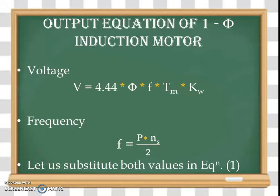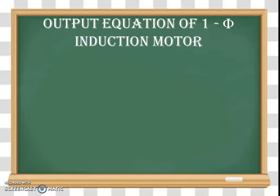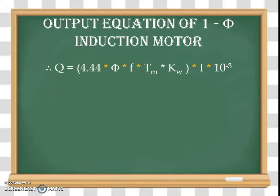Now we have these two equations and let us substitute both values in equation number one. First we will substitute the value of V, and then the value of frequency F. If we substitute the value of V, the equation for Q becomes: Q = 4.44 × φ × F × Tm × Kw × I × 10⁻³.